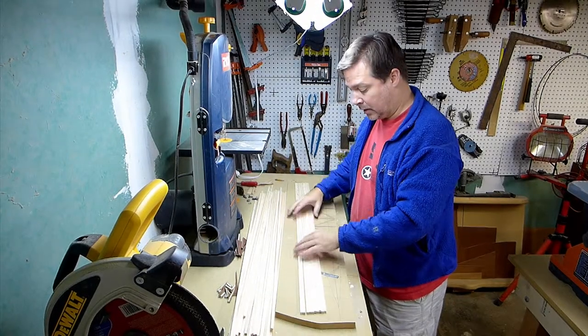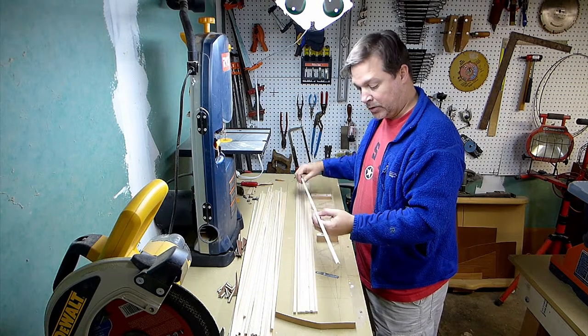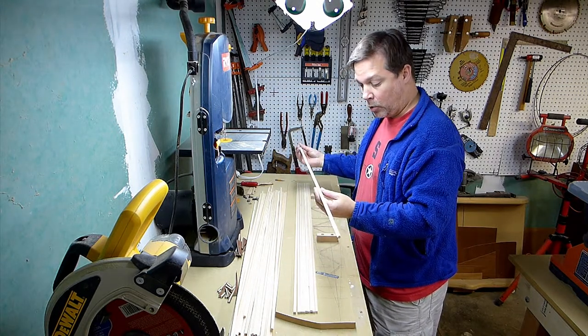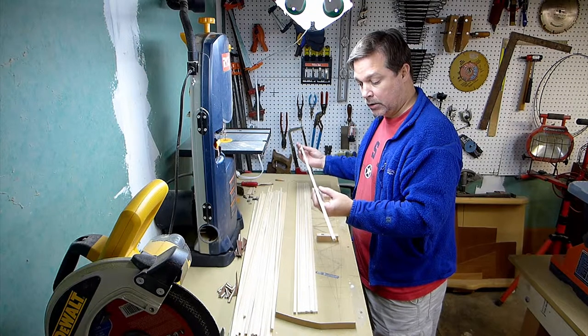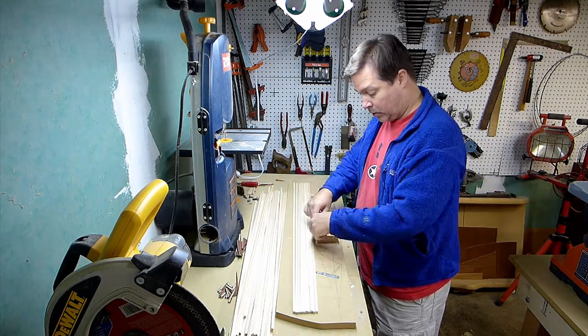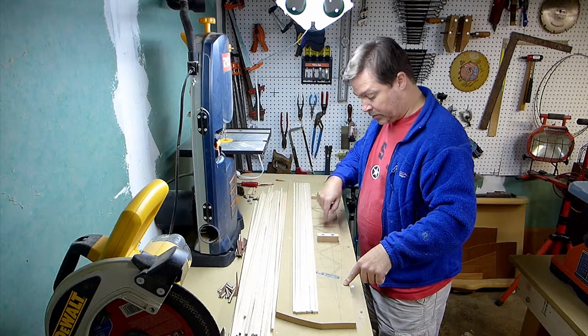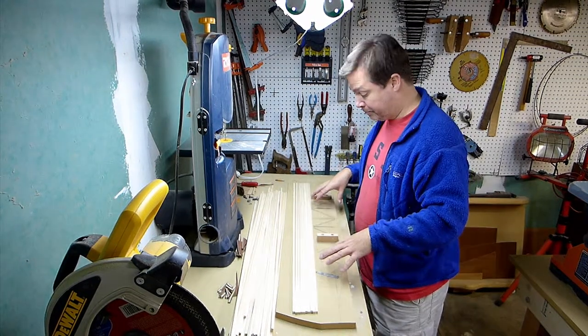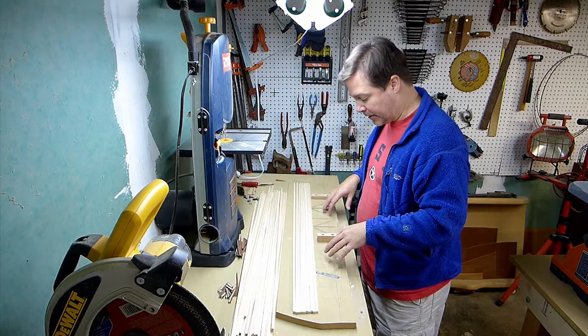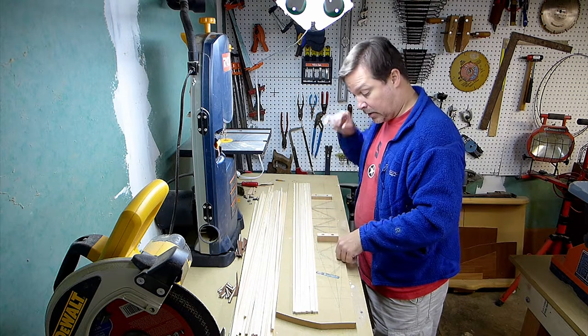One of the major components of building the ribs in the Super Baby Great Lakes is a whole slew of this quarter-inch by quarter-inch spruce. It's used for the cap strips, which are the top and bottom pieces of each rib, and for all the bracing that goes in the middle of the rib, fills in the gaps and provides the structure and rigidity and strength.